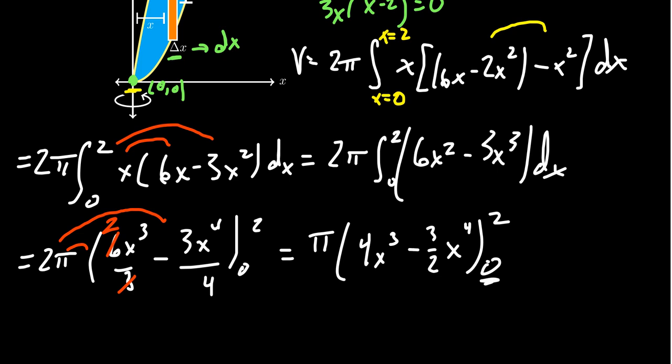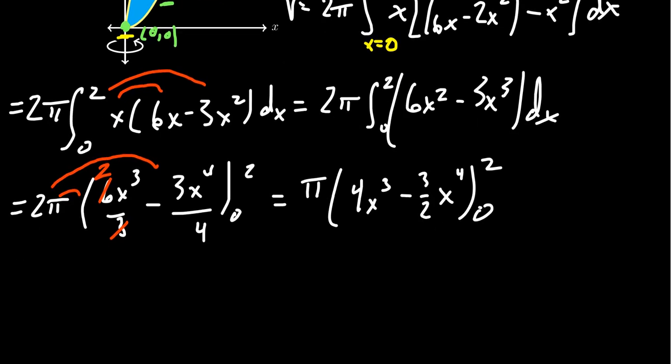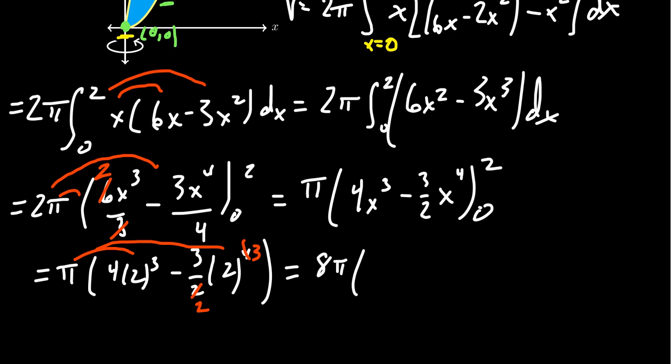The good news is we plug in 0, everything is a multiple of x, so it'll just vanish at 0. Plug in 2 is where the interesting thing happens. We end up with pi times 4 times 2 cubed minus 3 over 2 times 2 to the 4th. One of the 2s here cancels with this 2 right here. So we're left with 2 cubed, which is 8. I'm going to factor that out. So we get 8 pi times 4 minus 3. 4 minus 3 is 1, so we end up with the volume being 8 pi.